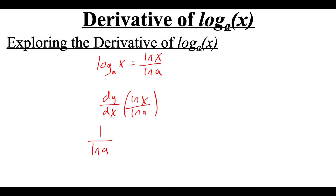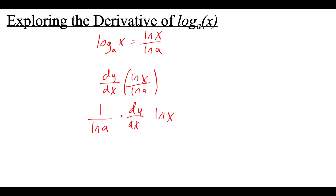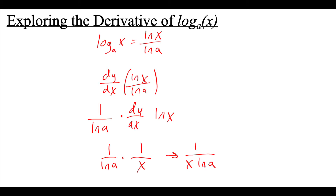Because that doesn't have any x's in it, doing the derivative with respect to x doesn't affect that at all. So now we're really multiplying that by the derivative of just the natural log of x, and the derivative of the natural log of x is 1 over x. So we have 1 over the natural log of a times 1 over x, which we write as 1 over x times the natural log of a. So the derivative of log base a of x is 1 over x times the natural log of that base a.